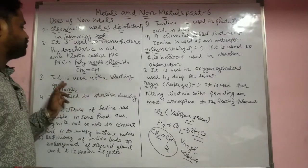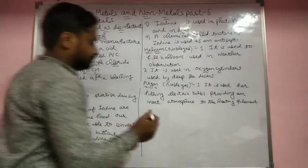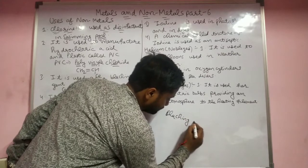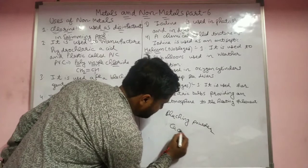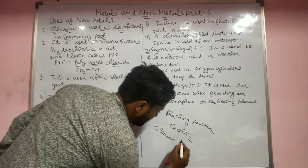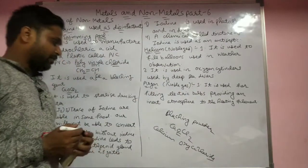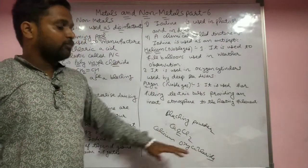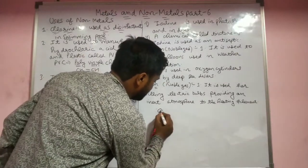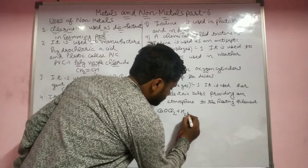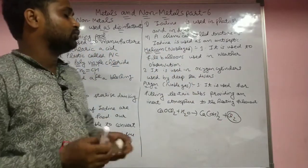Chlorine is also used as a bleaching agent. For example, bleaching powder is calcium oxychloride. When bleaching powder reacts with water it forms calcium oxychloride plus Cl2 gas, and the Cl2 gas acts as a disinfectant.